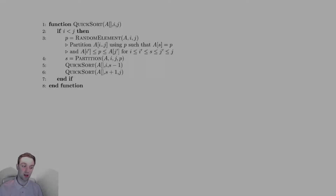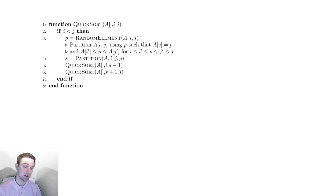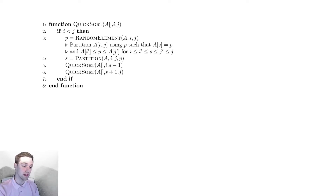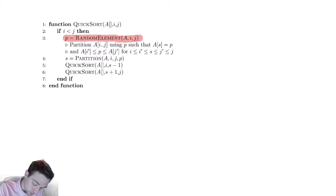In this video we're going to be talking about a more typical implementation of quicksort. For this implementation, we are replacing the idea of finding the median element of the array with the idea of selecting a random element, expecting that over the course of the entire sorting algorithm you might get roughly the same behavior. The only thing different from the previous code is that we have selected a random element. Finding a random element takes constant time.